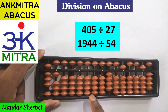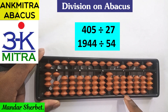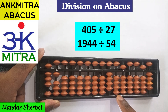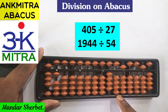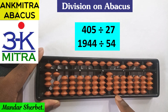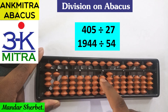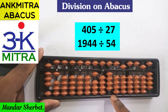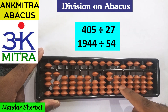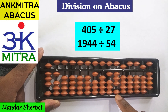We'll consider the first two-digit number from the question set, which is 40. From 40, what can we subtract — one, two, or three times? We can subtract only one time, since 27 one time is 27. So we take 1 in the answer set. This 40 is on the tens-place rod of the question set, so the answer starts on the tens-place rod of the answer set. Subtract 27 from 40: 20 remains, and for subtracting 7, it's plus 3 minus 10.